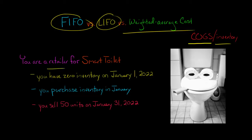Let's say you're a retailer for an item called the smart toilet. This is a new exciting type of toilet where it's got Wi-Fi, everything you need for that special moment when you are on the toilet. So you've got zero inventory as of January 1st, 2022. Then you're going to make some inventory purchases during January, and then you're going to sell 50 units of the smart toilet on January 31st, 2022.